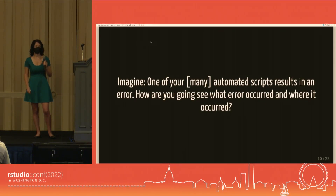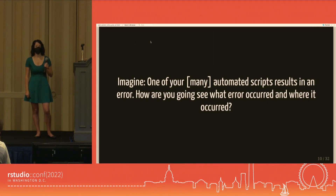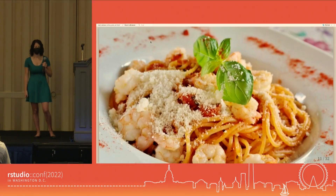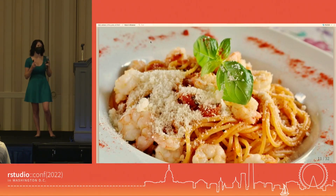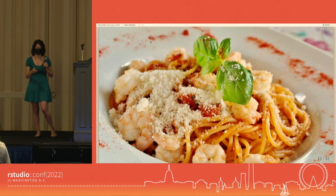Now we have automation — but imagine one of those many automated scripts results in an error. How are you going to see what error occurred and where? Doing that can be like finding a single noodle in a giant bowl of messy spaghetti. Error alerts and logging are there to help.